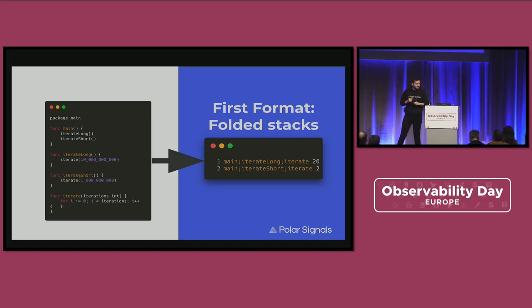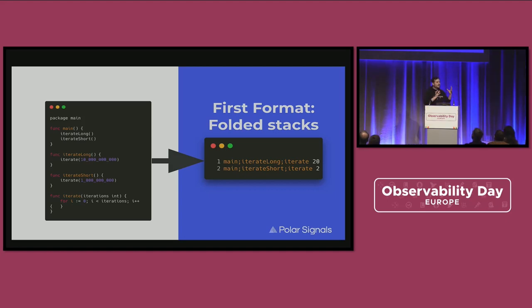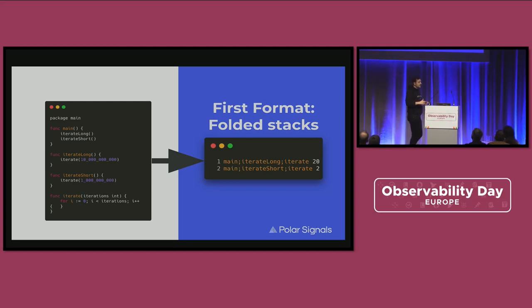Here's a small piece of example code. First, a function called iterate_long with a for loop that iterates 10 billion times, just to produce some CPU time. Then the same function with 1 billion iterations — iterate_short takes one-tenth the execution time. So we have 20 observed samples for the long and two for the short. What we're seeing on the right-hand side is our first format: folded stacks. I'd consider this probably the simplest format out there — very human readable, but as we'll see later, it also has a lot of shortcomings.